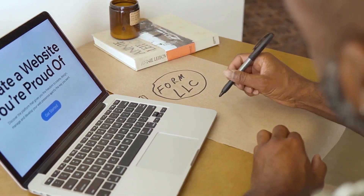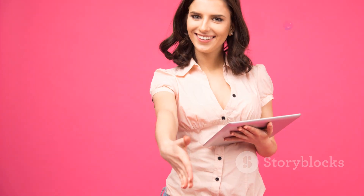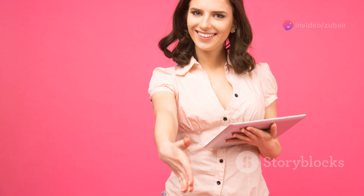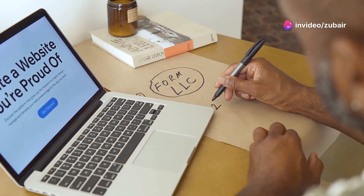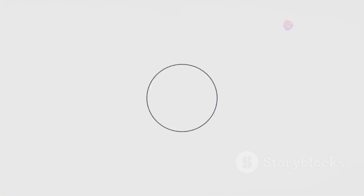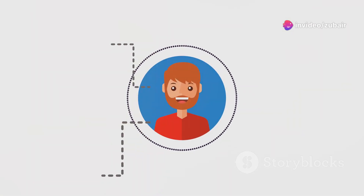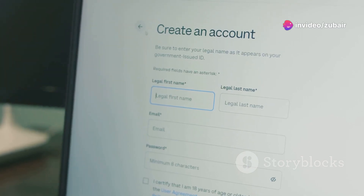First, create an About page — share your story and background, which helps build trust with your audience. Next, the Services page should list what you offer; be clear and concise. Your Blog page is a great way to share updates and information — regular posts can boost your SEO and keep visitors returning. Finally, the Contact page should include a form or contact details, making it easy for visitors to reach out.